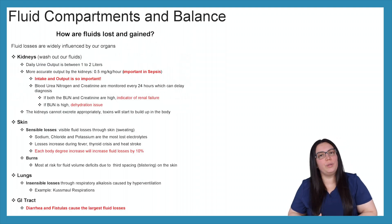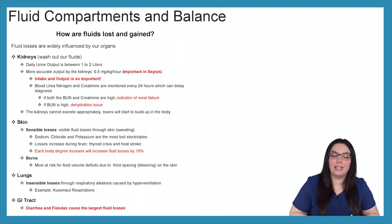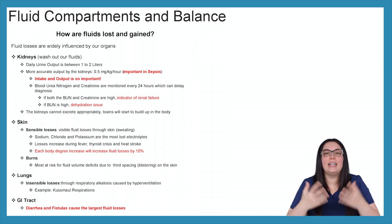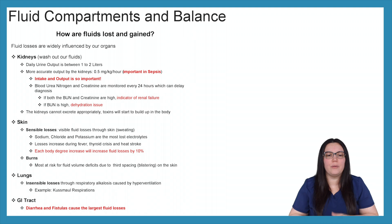So let's look at how fluids are lost and gained. So we know that fluid losses are widely influenced by our organs. So let's begin by looking at our kidneys. Now our kidneys are like the washing machines of our body. They really wash out all of our fluids. So our daily urine output that we expect to see is between one to two liters.